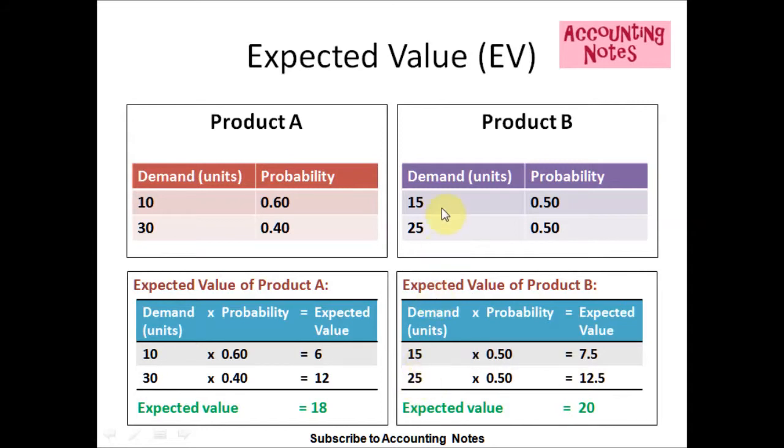For week 2, the demand is 25 and the probability is 0.50. So, 25 times 0.50 equals 12.5 expected value. The expected value for Product B is 20, which is 12.5 plus 7.5 equals 20.